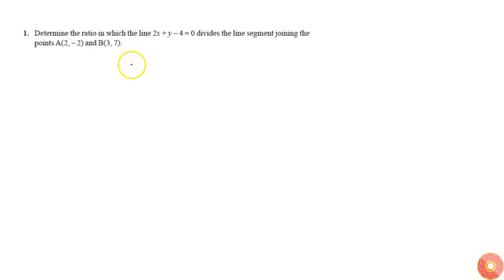In this question we are asked to find the ratio in which this line divides the line segment joining these points. Any point on that line will be of the form (x, y) = (-2x + 4). Now let's say m1:m2 is the ratio in which it's dividing.